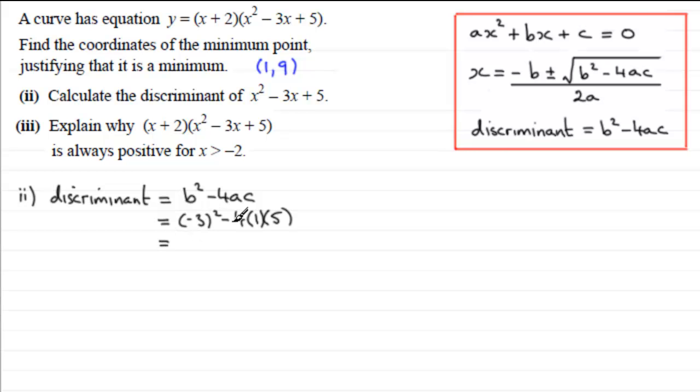In part 3, explain why x plus 2 multiplied by x squared minus 3x plus 5 is always positive for x greater than minus 2. This is essentially the graph y equals that expression.